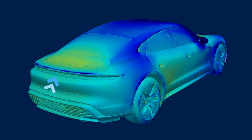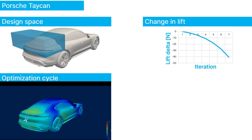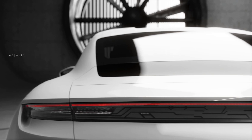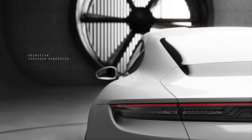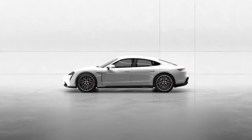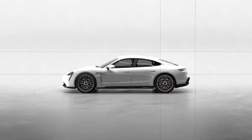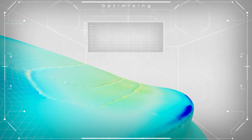You can do this on the entire object, or you can constrain it to what is called a design space, which is typically a box in which the algorithm is allowed to play or morph the 3D model. Now let's get back to the Porsche Taycan. Imagine we want more downforce at the rear of the car. In that case, we could create a design box around the rear boot of the car and constrain the algorithm to only work in that region.